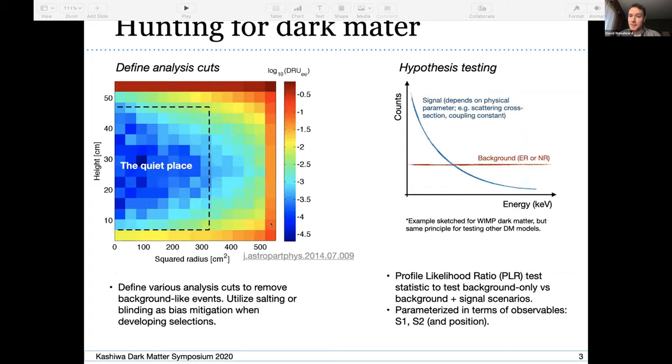So this is a slide just generally showing how these searches work, how do we hunt for dark matter. Basically, you're looking to take your data and apply various analysis cuts to remove events that you know are probably going to be backgrounds. So this is an example of one such cut. It's a fiducial cut which is just taking events in the inner portion of the detector, and that's because backgrounds like to accumulate on the outside of the TPC.